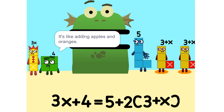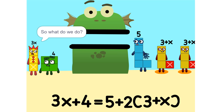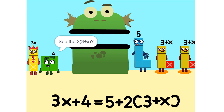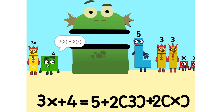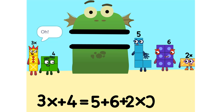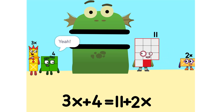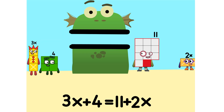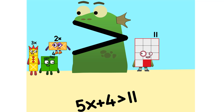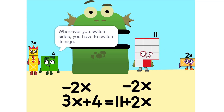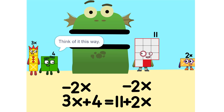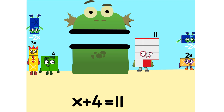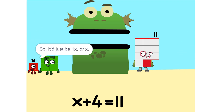So? It's like adding apples and oranges — you can't. So what do we do? See the 2 times (3 plus X)? That's the same as 2×3 plus 2×X, which is 6 plus 2X. And 5 plus 6 is 11. Now we have to move things around. We have to move this 2X to this side — so 5X. Whenever you switch sides, you have to switch its sign. So if it's positive, it becomes negative and vice versa. Why? Think of it this way — you're subtracting 2X from each side. So it'd just be 1X, or X. Correct.